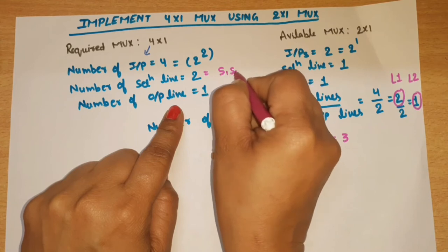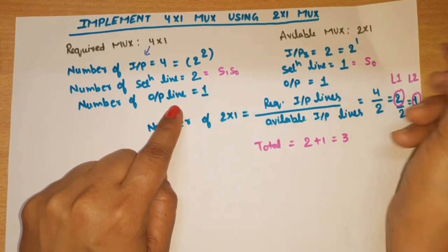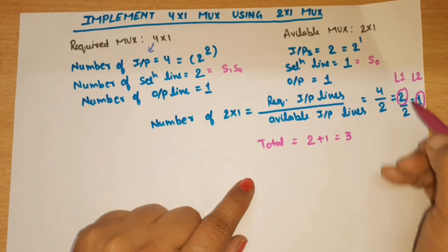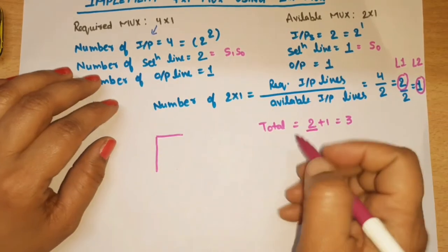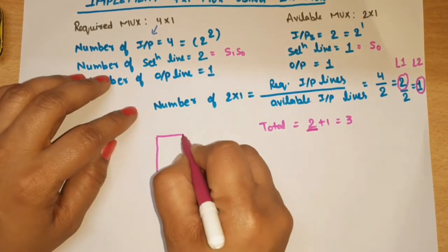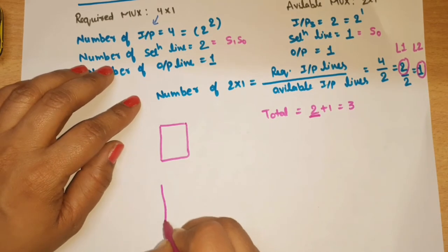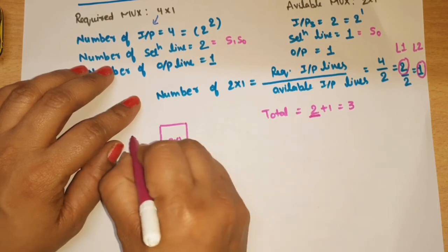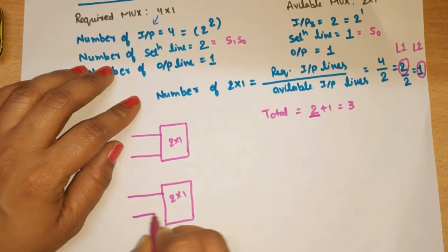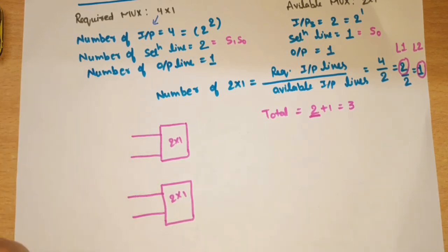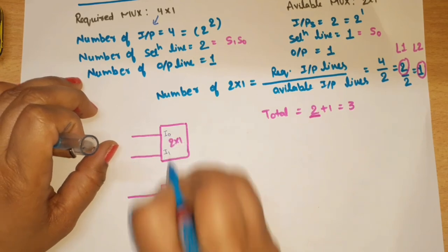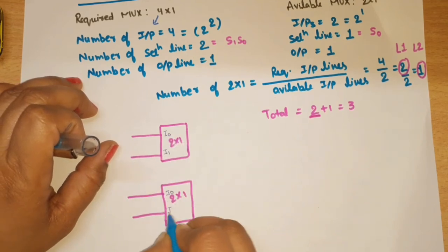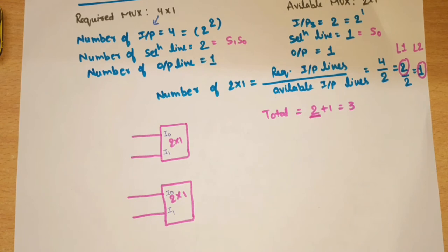We need 3 in this case. For 2 selection lines, S1 and S0. In this case, only one selection line, S0. First level has 2 MUXes. The first 2-to-1 MUX and second 2-to-1 MUX. Each has two inputs: I0 and I1. This is I0, I1.